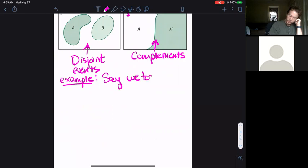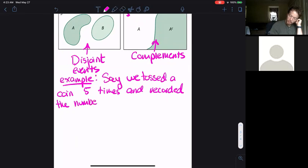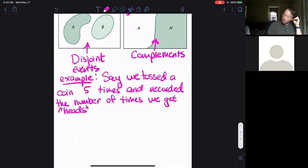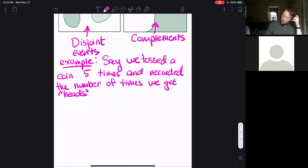Here are two examples. Say we tossed a coin five times and recorded the number of times we get heads. Consider the following events: A, we get heads zero, one, two, or three times. I'll call event B, we get heads five times.